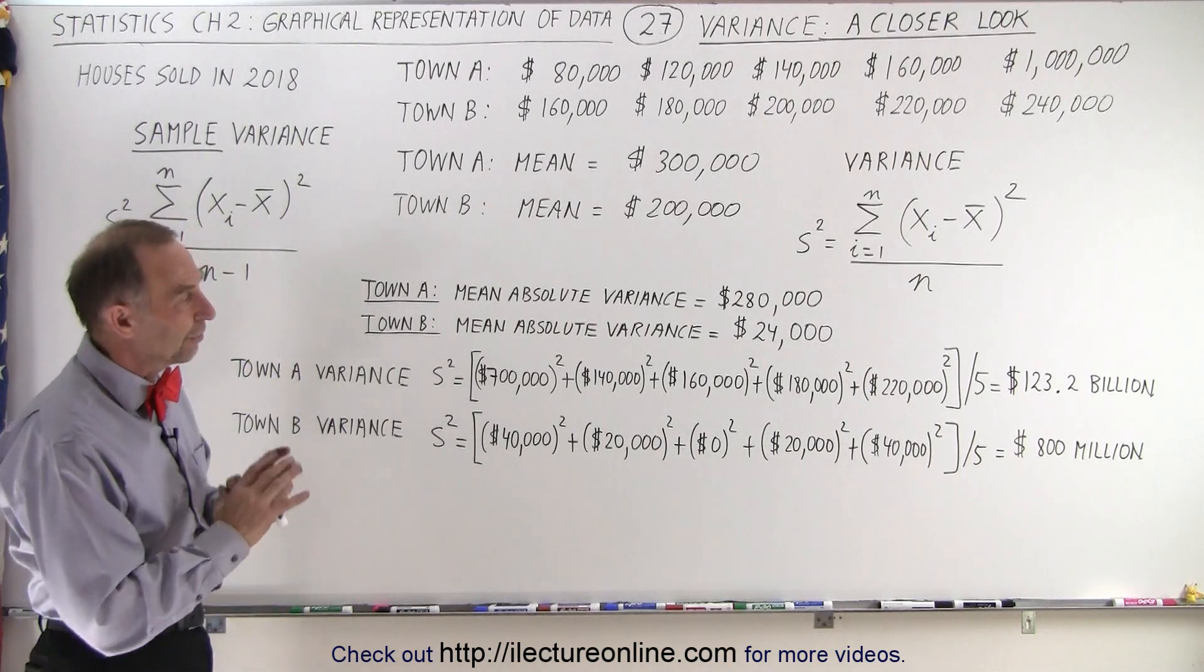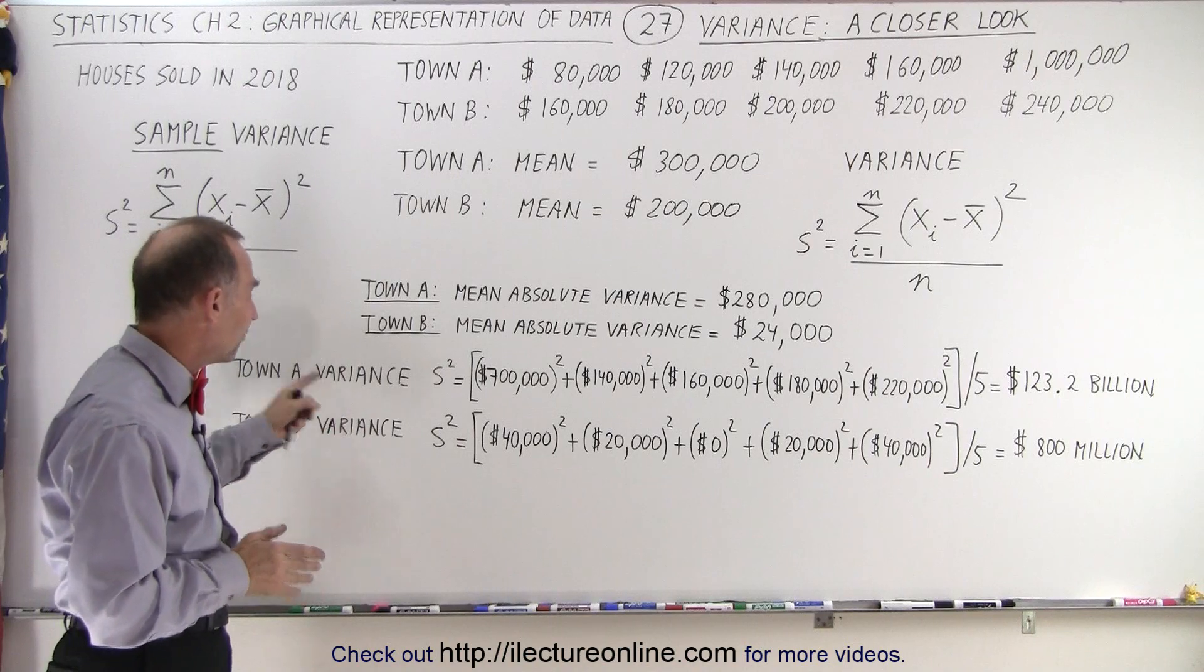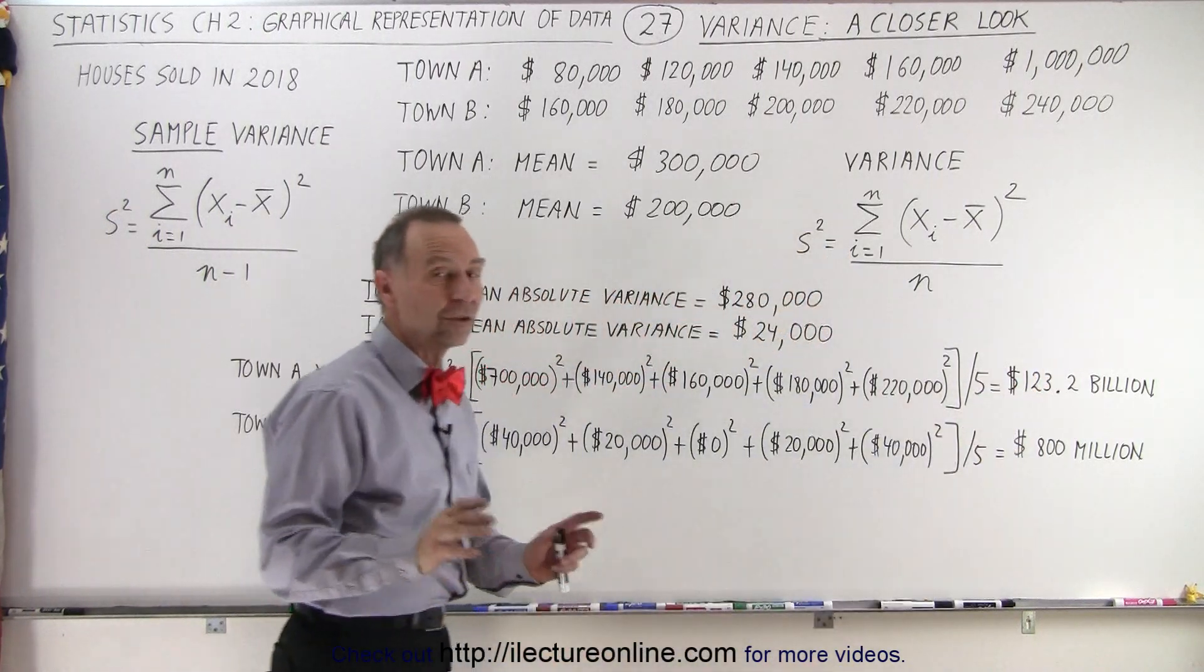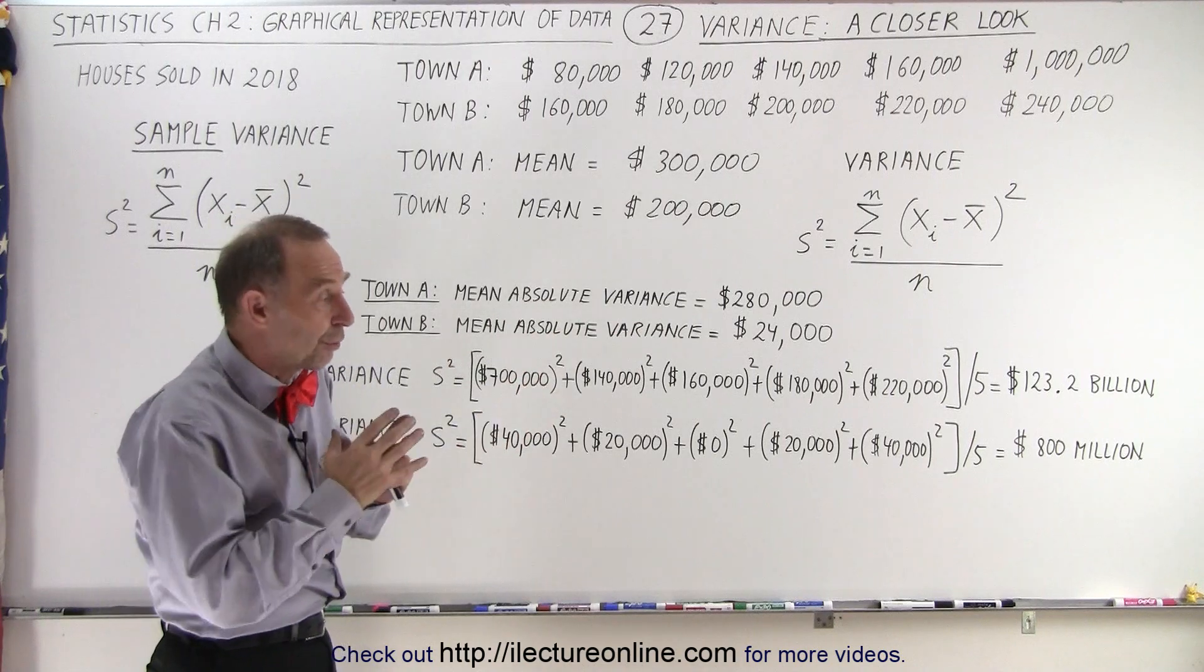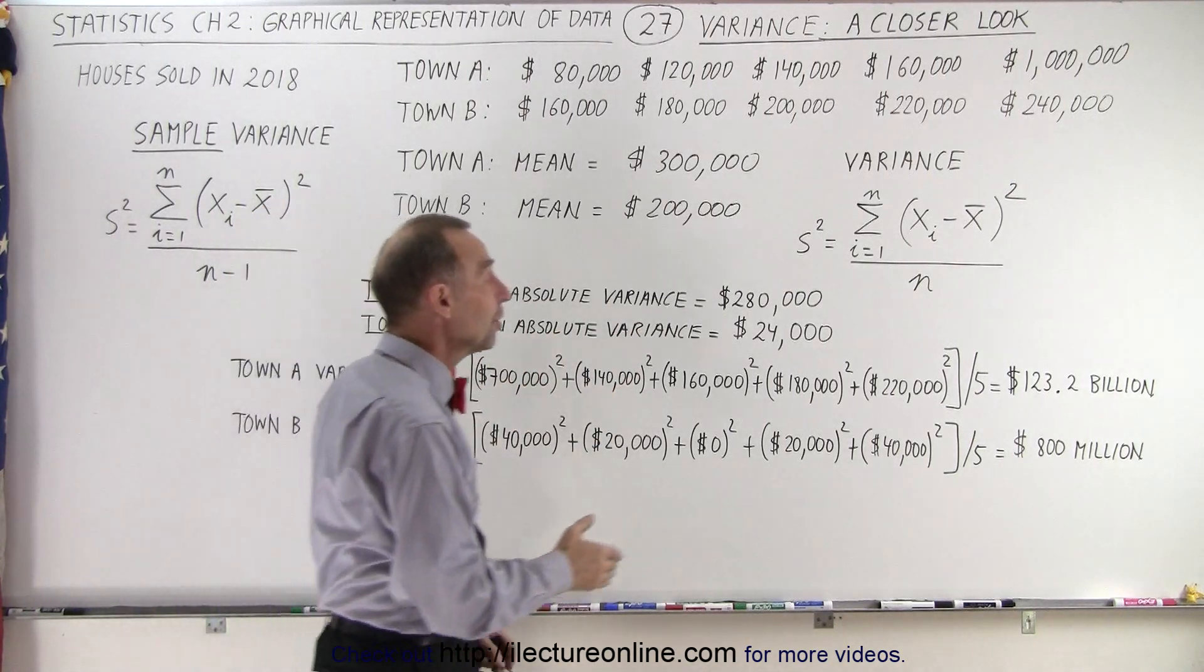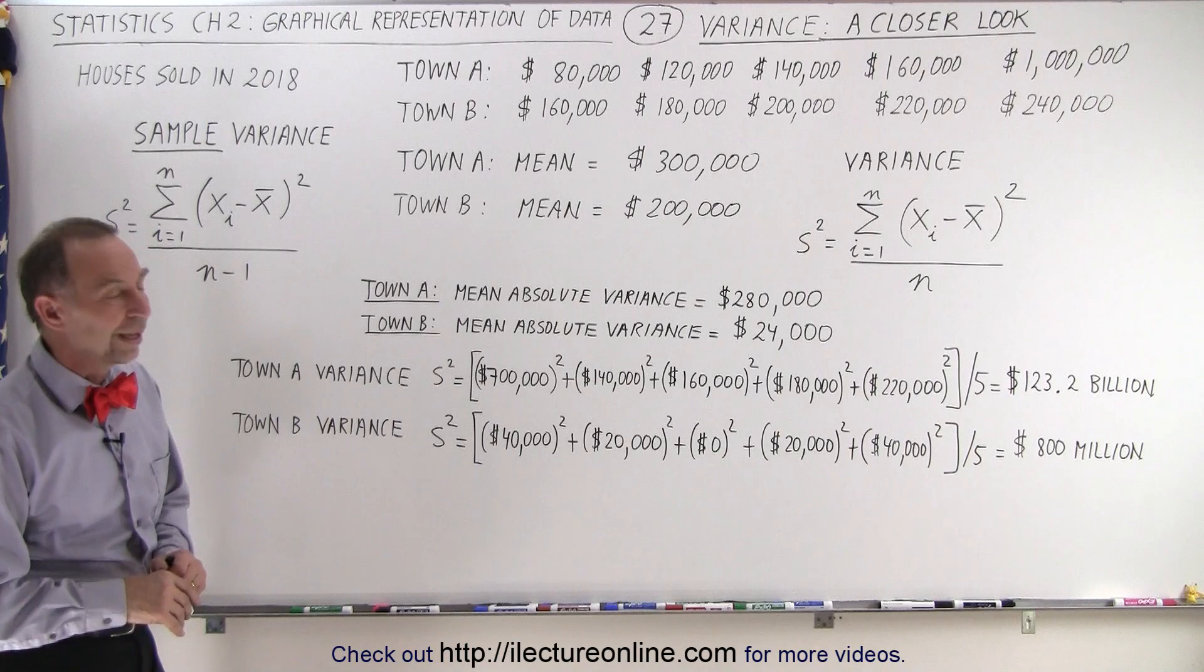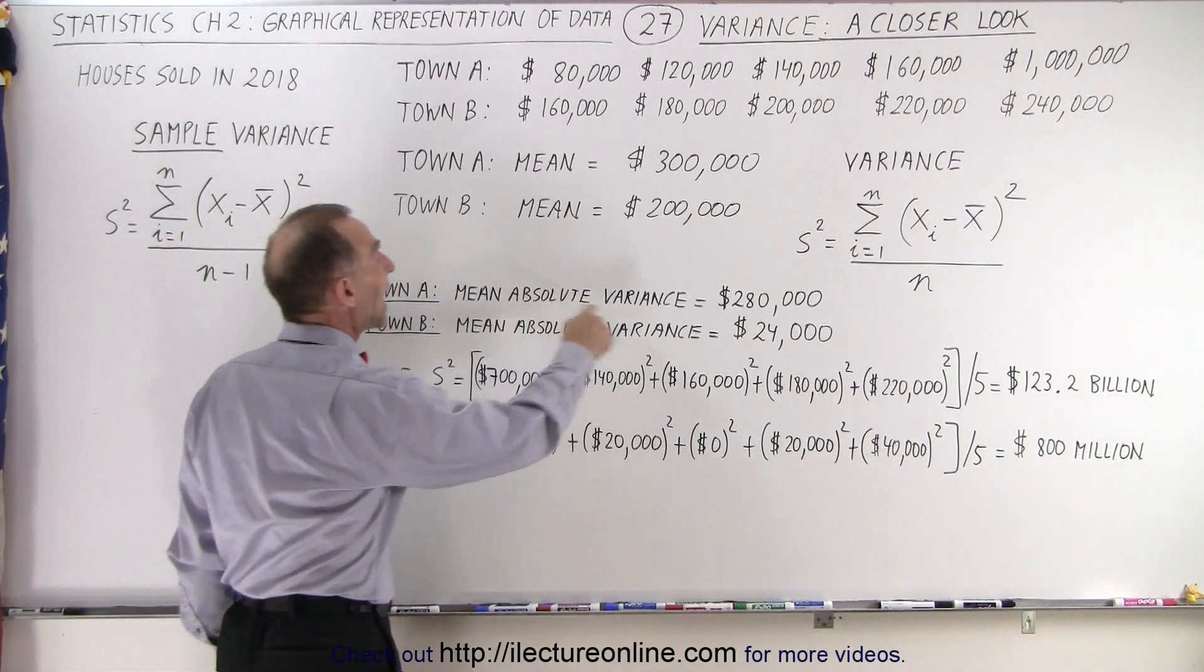The mean absolute variance just works with the actual differences, but the variance deals with the differences squared. When you sum all those up, you get some very big numbers. And so you can see that when there's more variation in the prices or more variation in the numbers you're looking at, when you calculate the variance, you get a much bigger difference compared to the one where you have less variation in the numbers. And that's sometimes why we use the variance rather than the mean absolute variance.